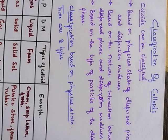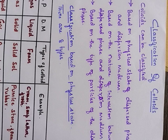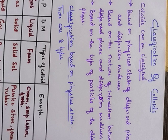True solutions are transparent and homogeneous because of their particle size, which is less than one nanometer, and they can pass through filter paper. In suspensions, the particle size is more than 1000 nanometers, so particles are visible to the naked eye. Colloids are intermediate between these two states — they look homogeneous but are actually heterogeneous, with particle size ranging between 1 nanometer and 1000 nanometers.